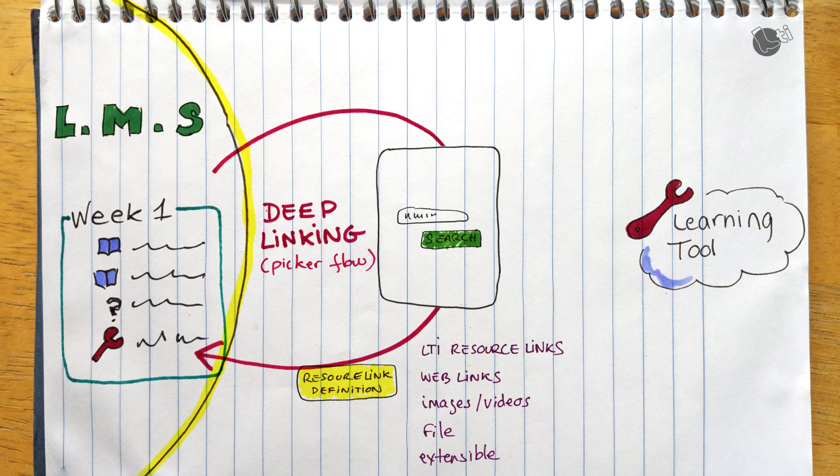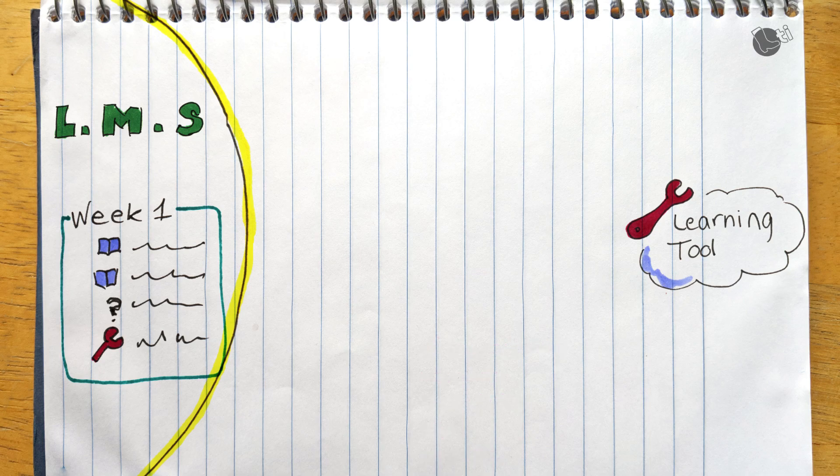Deep linking can also be used to pick other kinds of content than LTI links, such as images. And in that context, it's often used inside rich text editors, for example, to be able to grab assets like images or videos from an asset library, which is LTI compatible.